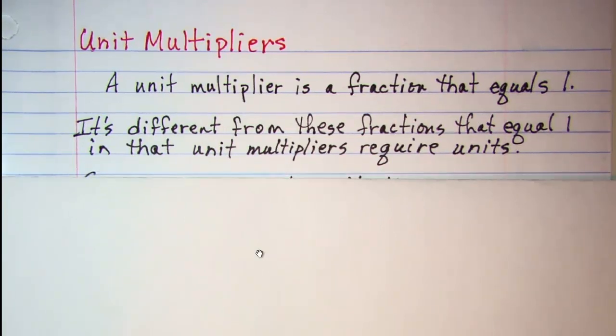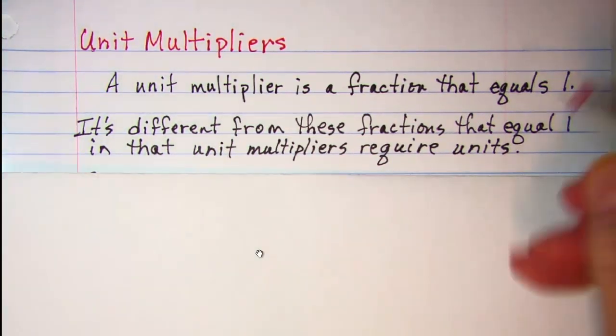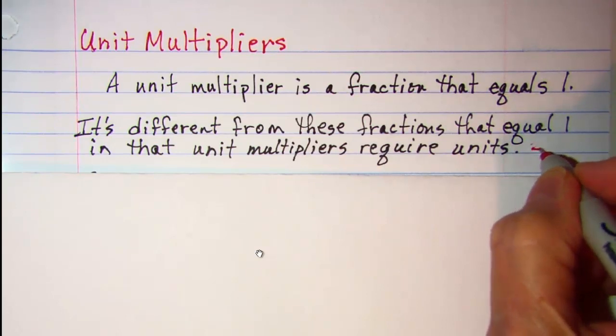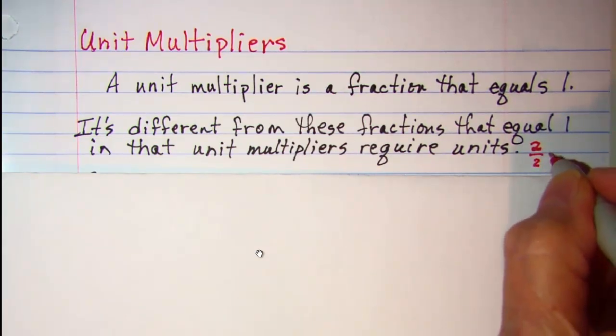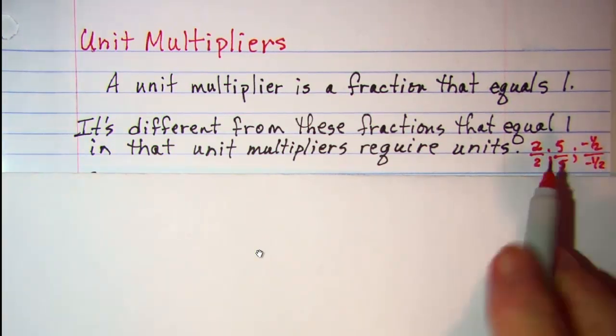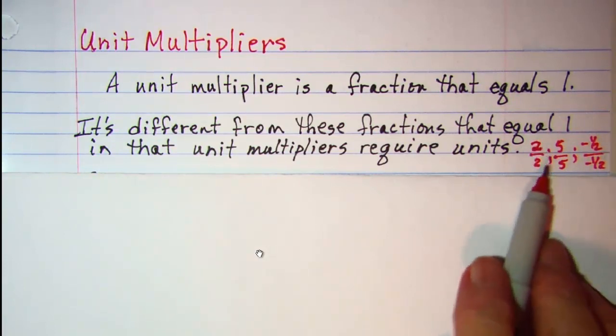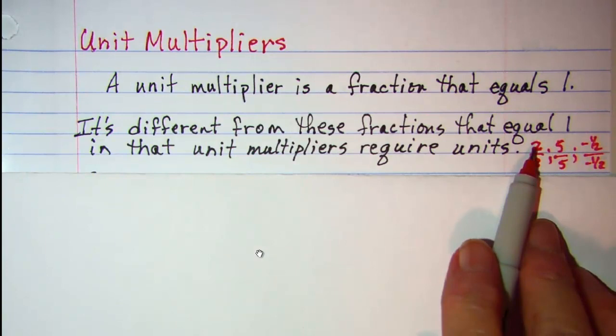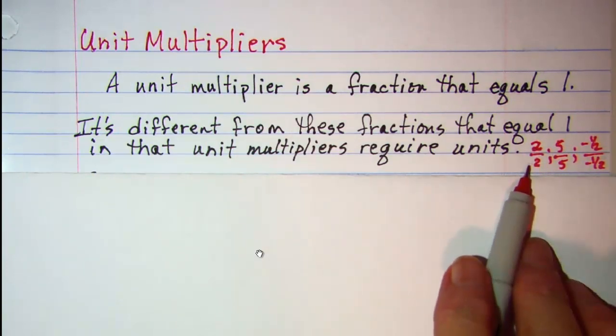So some fractions that equal one would be like two over two, five over five, negative one-half over negative one-half. So all of these fractions equal one because they have the same value in the numerator and the denominator.